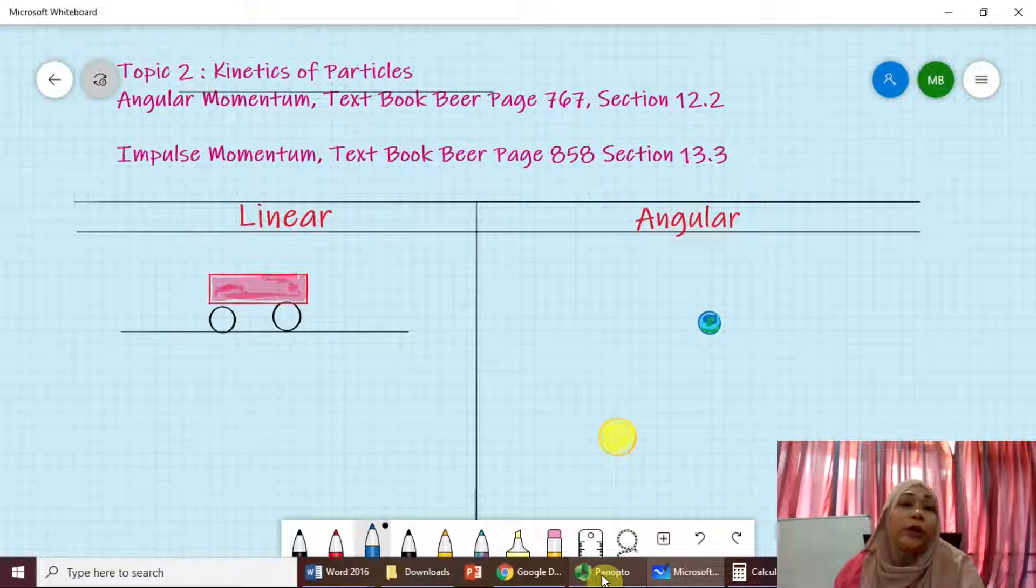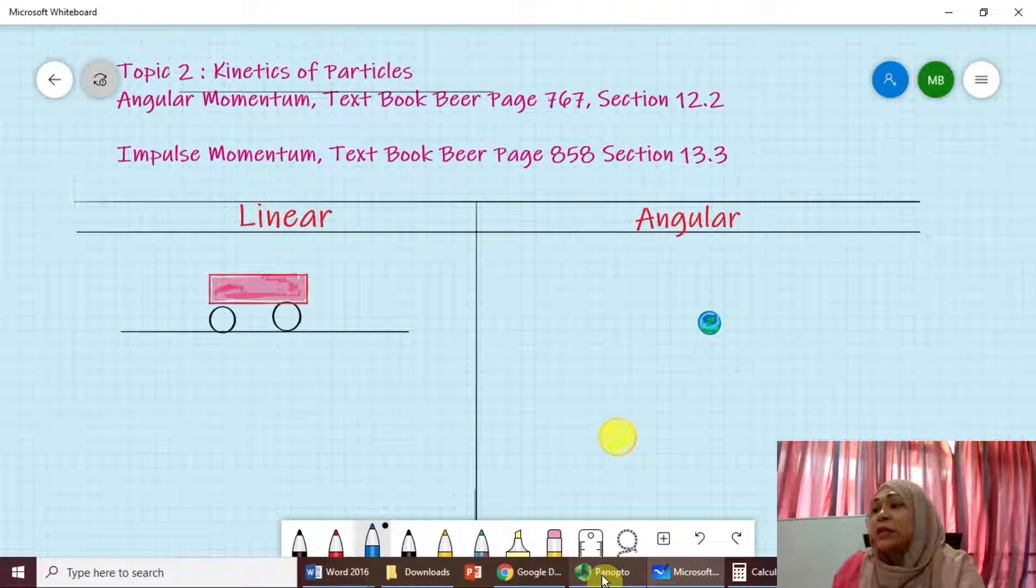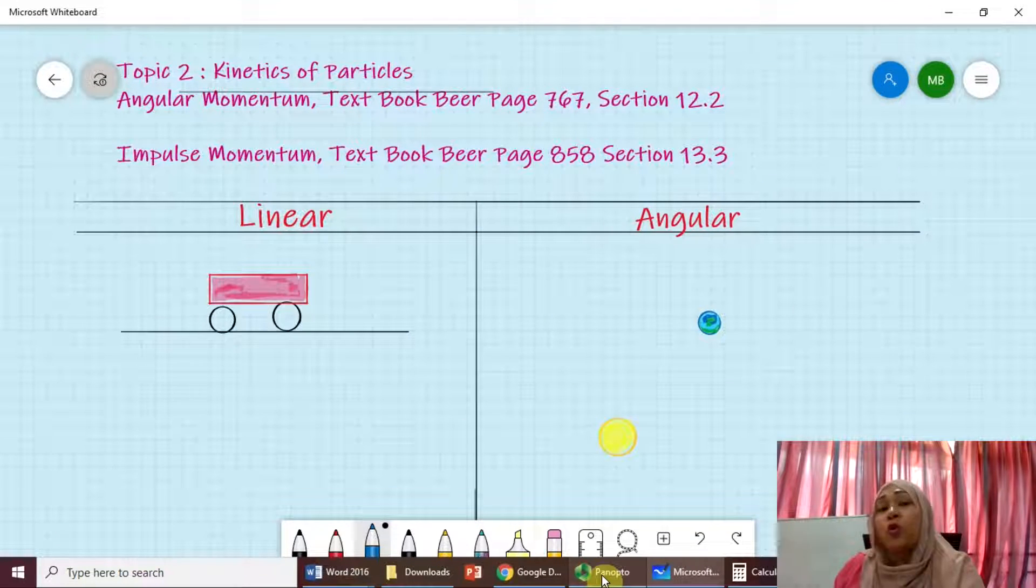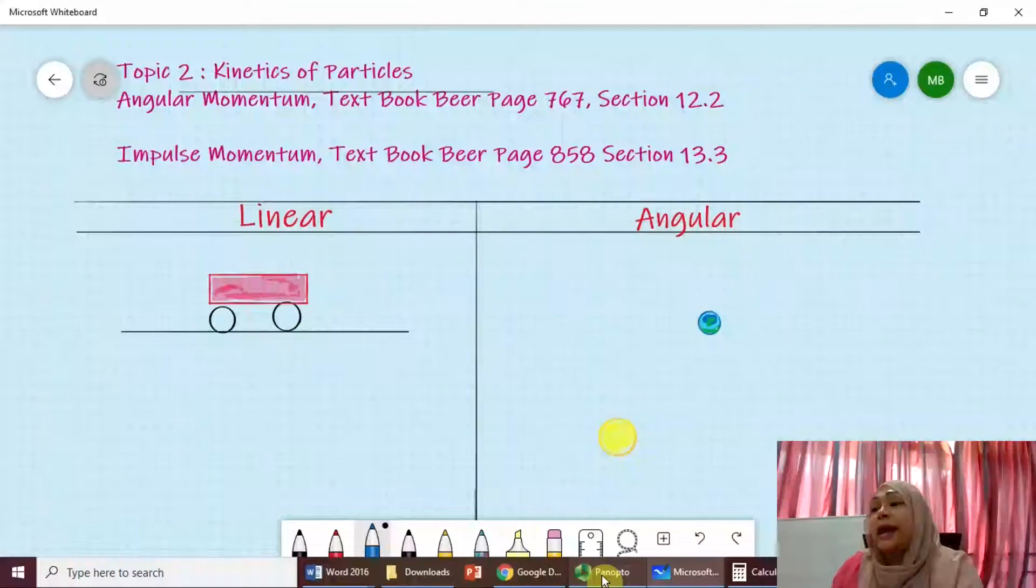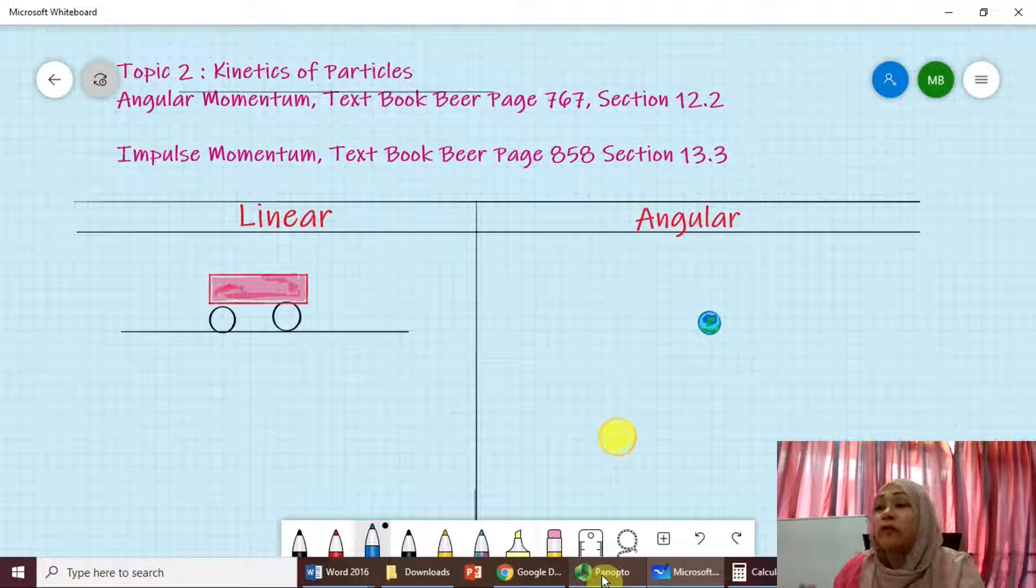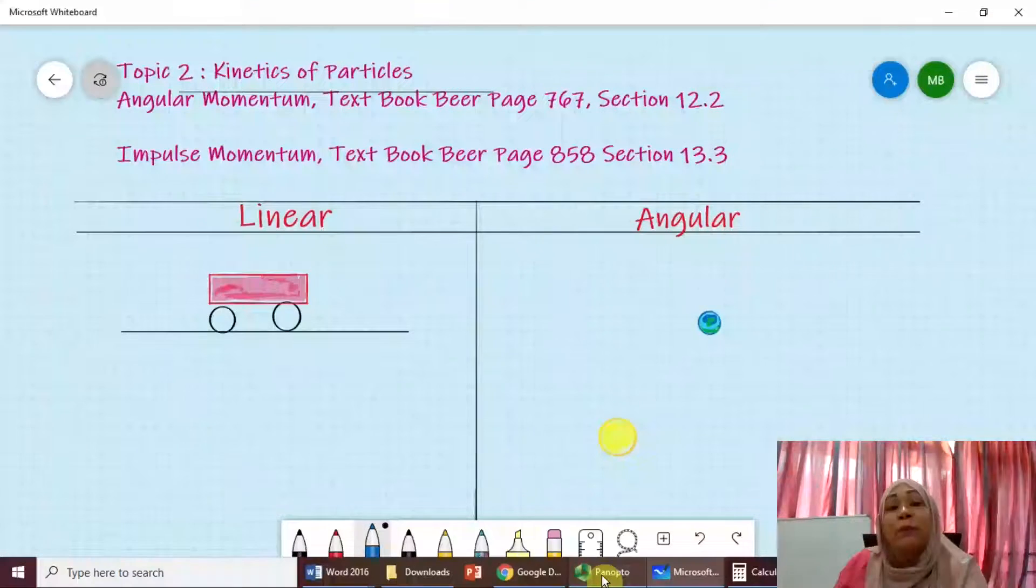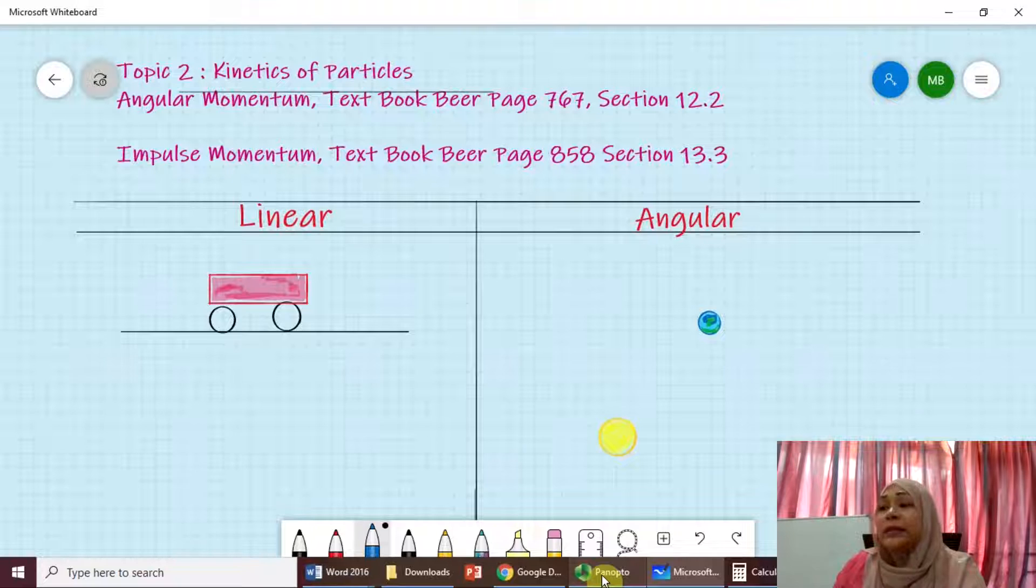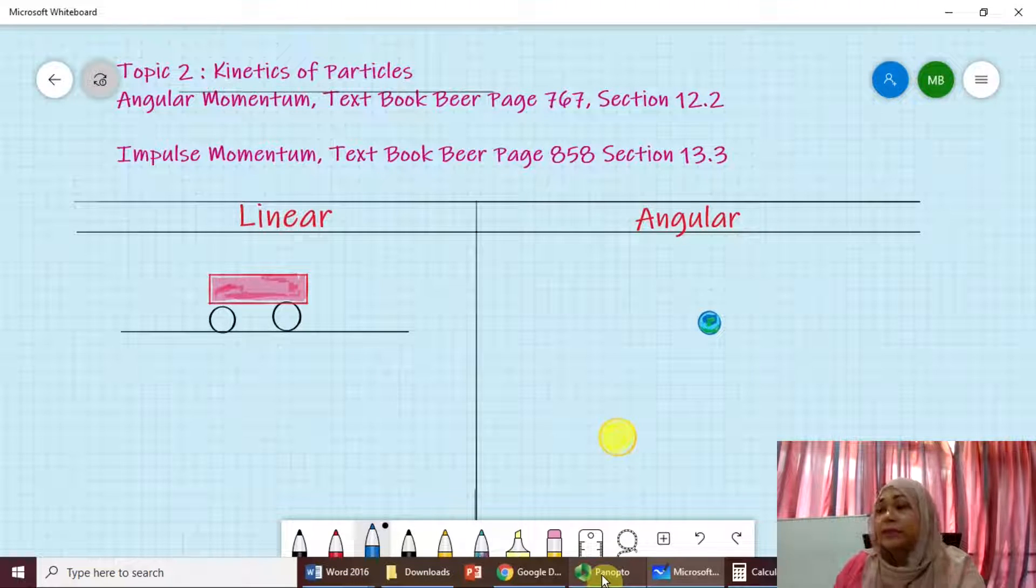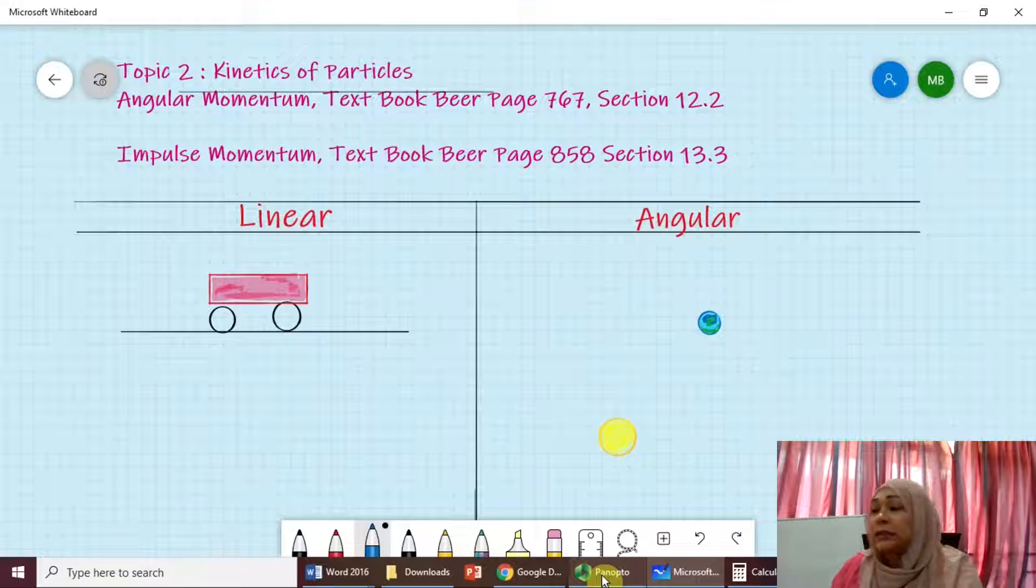So for today's class, I'm going to discuss with you the difference between linear momentum and angular momentum. First, I'm going to introduce to you what is linear momentum and show you how Newton's second law can be expressed in the rate of change of momentum, and then you'll be able to find what is the impulse momentum and what is the angular momentum. Now to start, as you can see, I have made a table to separate linear and angular momentum.